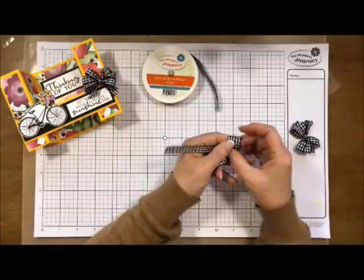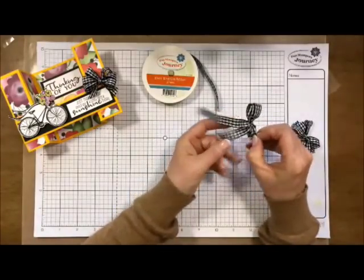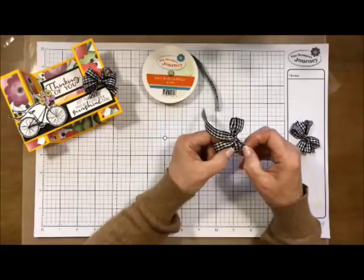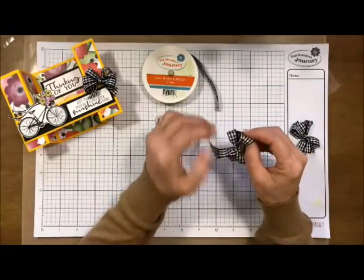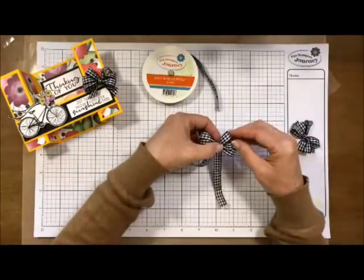And then you're just going to slide it off your fingers just as if you were doing a fork bow and fluff. Isn't that so cute? And now there's the front of it.